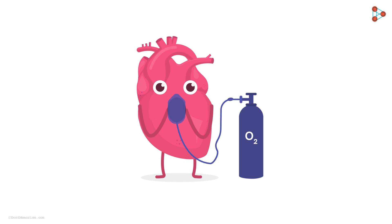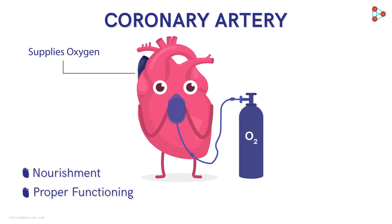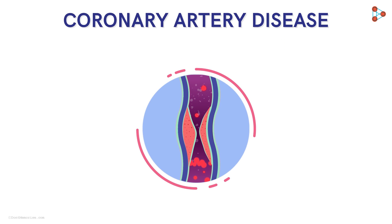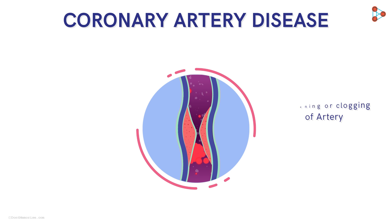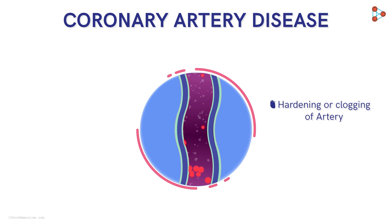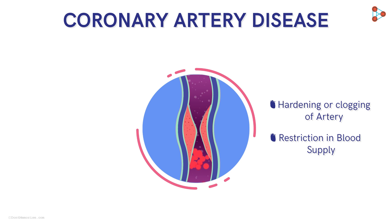Our heart muscles require a constant supply of oxygen-rich blood for their nourishment and proper functioning, and this job is meticulously done by coronary arteries. But the problem occurs when you have a coronary artery disease — a condition where the arteries become narrow and blood is not able to flow as it should. One reason could be hardening or clogging of the arteries, majorly because of the buildup of cholesterol and fatty deposits on the inner walls, which restrict blood flow to the heart.